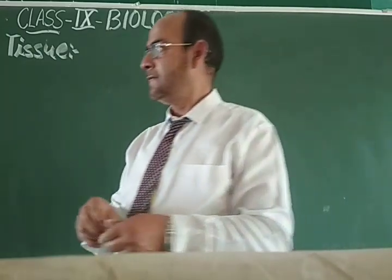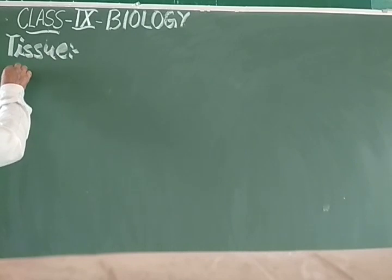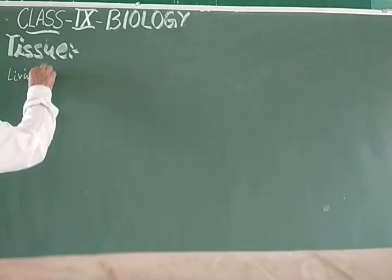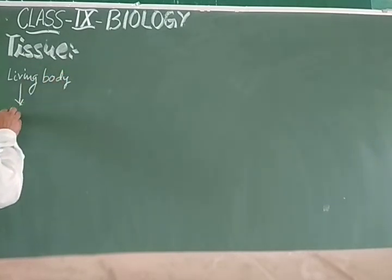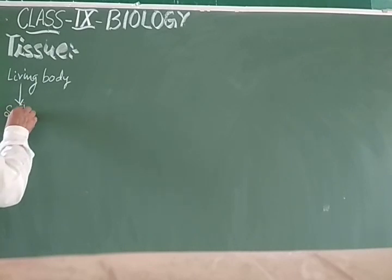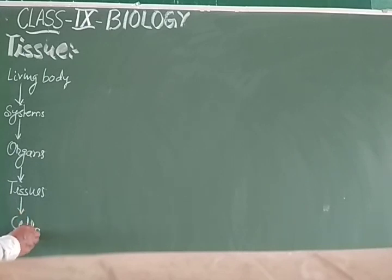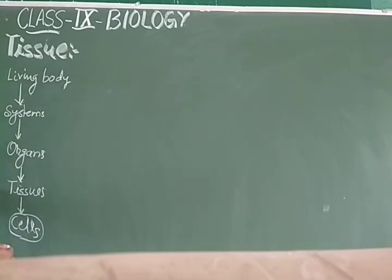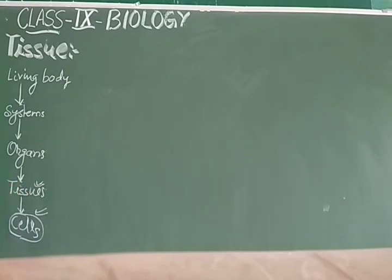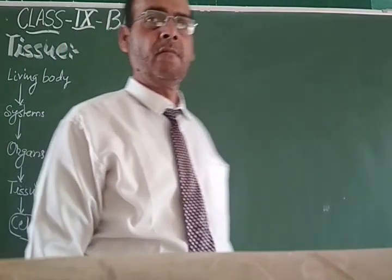All tissues are made up of different types of cells. So the living body is made up of systems, systems are made up of organs, organs are made up of tissues, and tissues are made up of cells. That is why cells are called the structural and functional unit of the living organism. We have studied this series of structural organization, and now we are at the study of tissue.